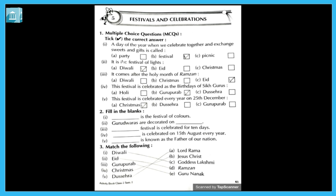The answer is b) festival. Second one: it is a festival of lights — yeh light ka festival hai, ujjalay ka, jis pe hum diye jalate hain. Options: a) Diwali, b) Eid, or c) Christmas. The answer is a) Diwali.